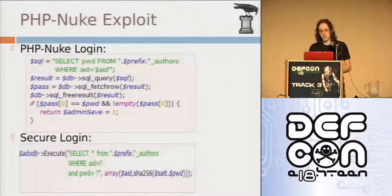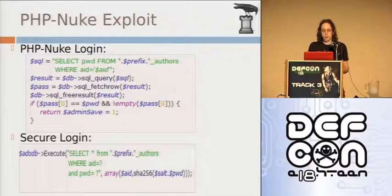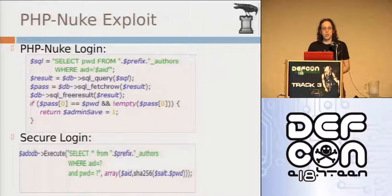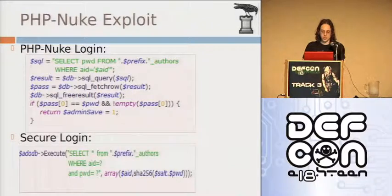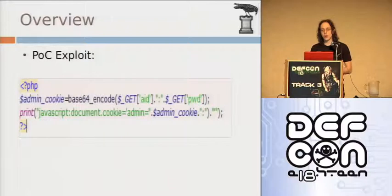PHP Nuke is pulling out the password based on the username and just doing this raw string comparison. This is equivalent to having a plain text username and password - we don't actually have to break the hash in order to log in. They are using MD5 and MD5 is proven to be insecure - it's no longer supported by NIST and it's easy to generate collisions. SHA-1 is still approved by NIST because no one has generated a collision, although there have been vulnerabilities found against it. SHA-256 is an ideal choice. An example of a secure logon is doing a salted SHA-256 hash and using parameterized queries. The code I used to generate the cookie is very simple - concatenating the user ID and the password with a colon, then base64 encoding it.